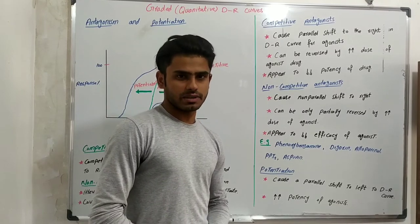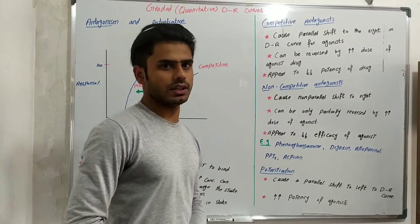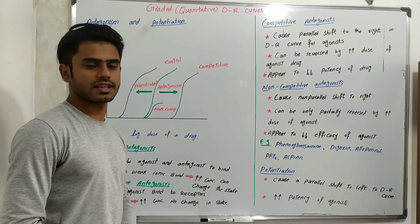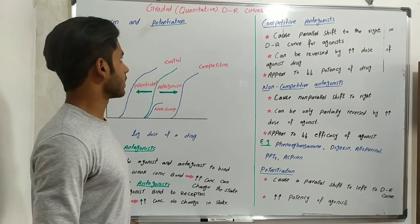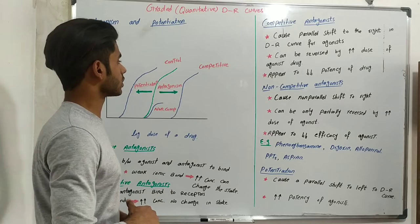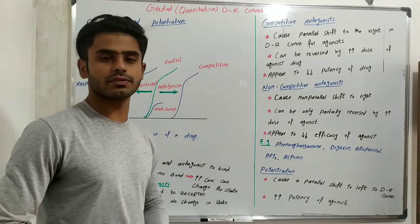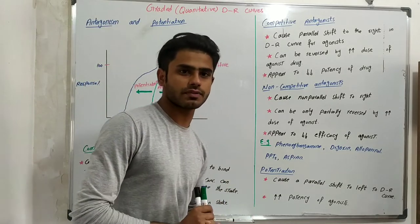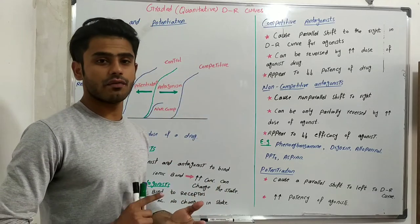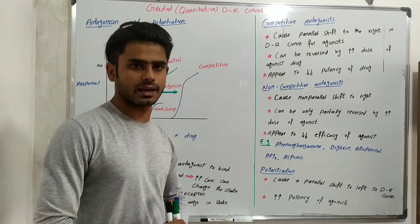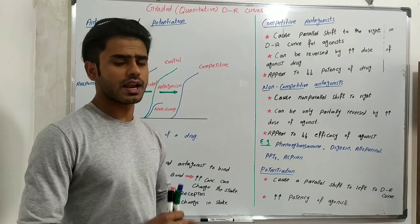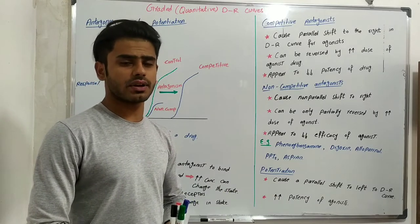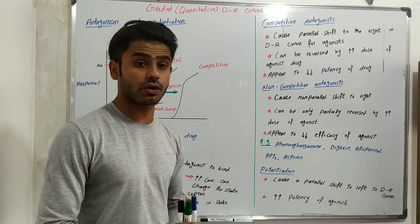Hi guys, my name is Jameel Amad. We were discussing the general principles of pharmacology, second chapter — pharmacodynamics — and we were discussing graded quantitative dose-response curves. In the previous two lectures we discussed parallel and non-parallel dose-response curves, and in the second lecture we discussed partial and polyagonistic curves, as well as the duality of the partial agonist curves.